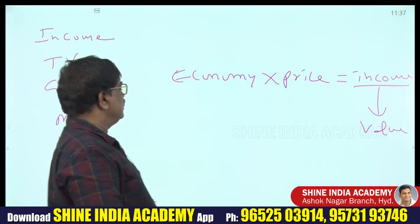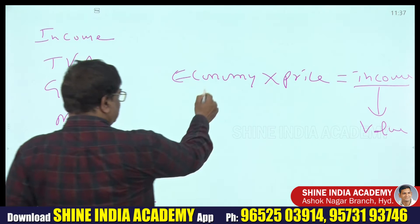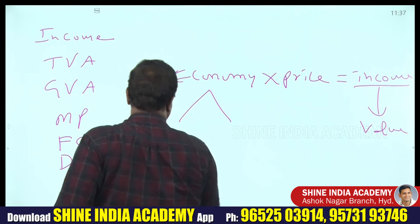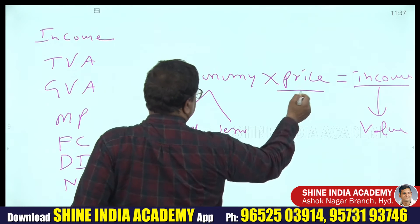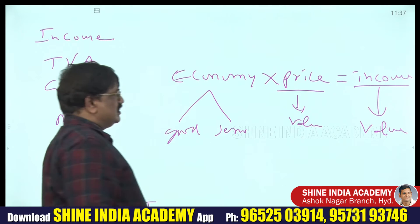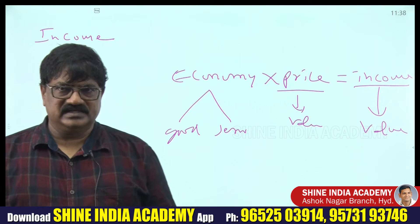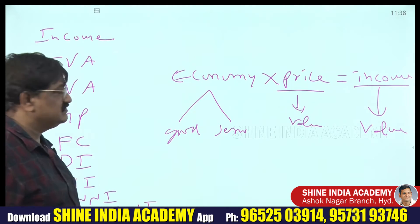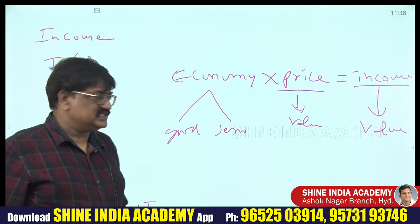Value is derived by multiplying the economy (goods and services) by price. So income = goods and services × price. Economy consists of goods and services; price means value here.